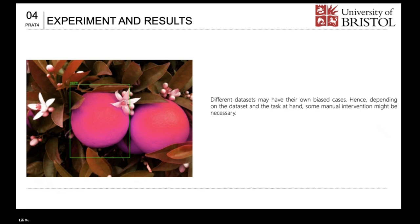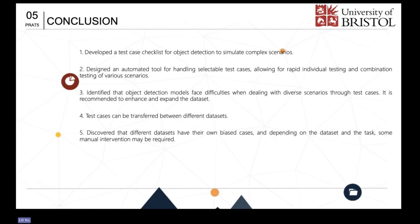Next is the conclusion section. This project has developed a comprehensive test case checklist for object detection to simulate complex scenarios and evaluate the performance of object detection models in diverse settings. We have designed an automation tool for handling the test cases, allowing for rapid individual testing and combination testing of various scenarios. Through the test cases, we have identified the challenges faced by object detection models when dealing with diverse scenarios, and we recommend data enhancement and augmentation as a solution. The test cases can be transferred between different datasets, providing flexibility in evaluating models across various data sources.